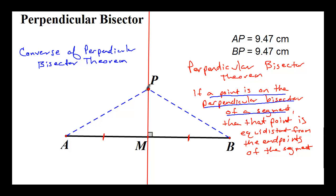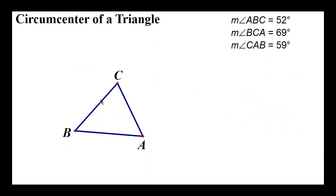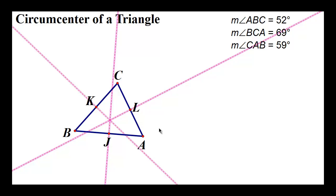Now we're going to complicate this a bit. Instead of just one segment, we're going to have three segments that make a triangle. Each of these segments can be bisected by finding their midpoints. Then I can draw a line through each midpoint that is perpendicular to that segment — doing this for all three sides and marking the right angles — giving us three perpendicular bisectors.